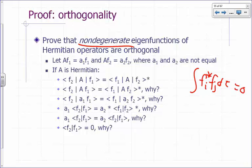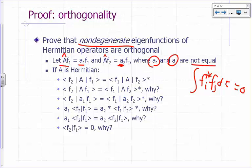Here's the proof. If you have non-degenerate eigenfunctions — what does non-degenerate mean? They don't have the same eigenvalues, different eigenvalues. So if you have â operating on f1 giving eigenvalue a1 times f1, and â operating on f2 giving eigenvalue a2 times f2, then if they are non-degenerate, a1 and a2 are not equal.